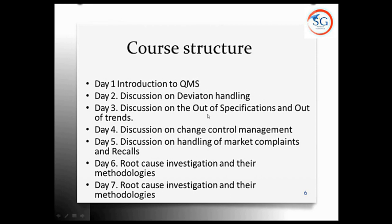The elements that come under the quality management system include deviation handling. A deviation is departing from a particular procedure. In the pharmaceutical industry, a procedure is a written standard operating procedure. If you are not following an approved written SOP, that is called a deviation. Deviations are classified into two types: planned deviation and unplanned deviation.